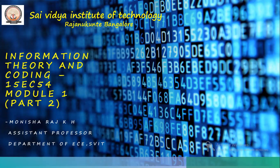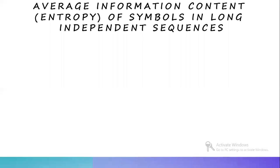We'll be seeing about average information content of symbols in long independent sequences, information rate, and we'll be seeing a few numericals in this session. First, we'll know what is average information content of symbols in long independent sequences, also known as entropy.